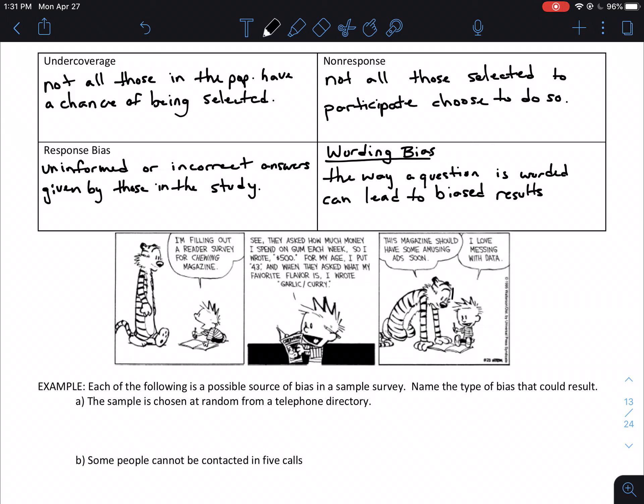It's similar to, but definitely different from non-response. And these two get kind of mixed around a lot of times. So the difference with non-response, which is where not all those selected to participate choose to do so. The difference is, let's go back to the email example. Under coverage was saying that there are some people that won't even get the email, that the email will either go to their spam or they won't read it because they don't have internet.